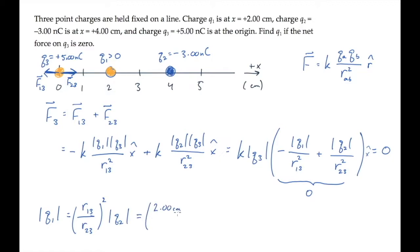If we substitute those distances, we see this factor is one-quarter, which tells us that the magnitude of q1 is 0.750 nC, and we know from above that its sign is positive.